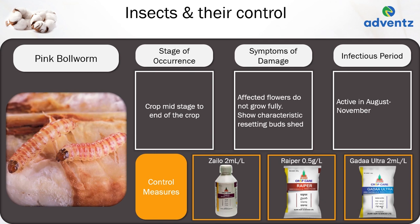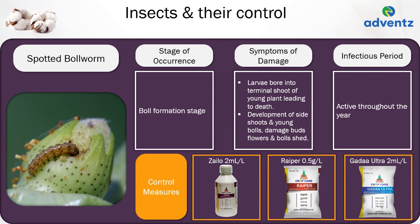The next insect is spotted bollworm. It occurs at the boll formation stage. The symptoms of damage are larvae bore into the terminal shoot of young plants, leading to dead heart. Development of side shoots occurs and young bolls, buds, flowers and bolls shed. It is active throughout the year. Control: apply Jai Kisan Xylo at 2 ml per litre, or Jai Kisan Griper at 0.5 grams per litre, or Jai Kisan Gadda Ultra at 2 ml per litre.